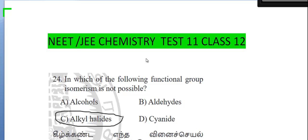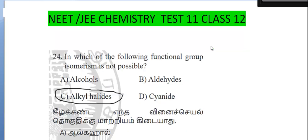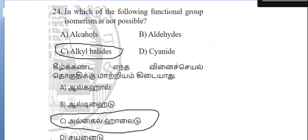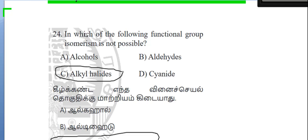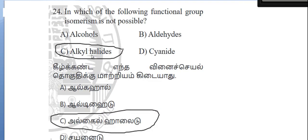Welcome, dear students. This is JEE Chemistry Test Number 11, Class 12, Question Number 24: In which of the following, functional group isomerism is not possible? The options are: alcohol, aldehyde, alkyl halide, and cyanide.